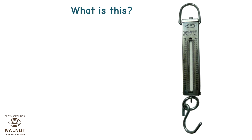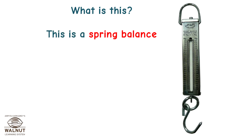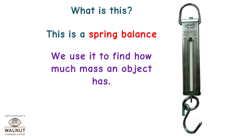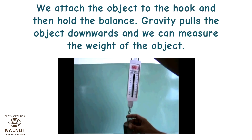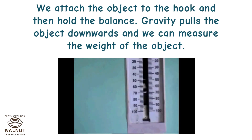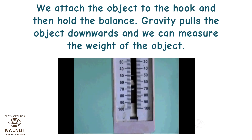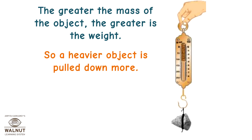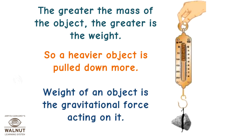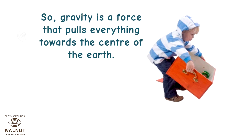What is this? This is a spring balance. We use it to find how much mass an object has — how heavy an object is. We attach the object to the hook and then hold the balance. Gravity pulls the object downwards and we can measure the weight of the object. The greater the mass of the object, the greater is the weight, so a heavier object is pulled down more. Weight of an object is the gravitational force acting on it. Gravity is a force that pulls everything towards the centre of the earth.